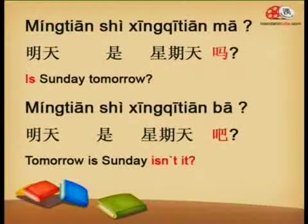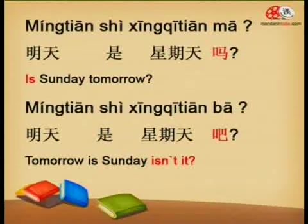Let's try one sentence with 吗 first: 明天是星期天吗? — Is it Sunday tomorrow? That's asking a genuine question, really wanting to know the answer. But with 吧 on the end: 明天是星期天吧? — Tomorrow is Sunday, isn't it? The person is already fairly sure that tomorrow is Sunday and is just asking to clarify — supposing it's Sunday and just wanting some confirmation.